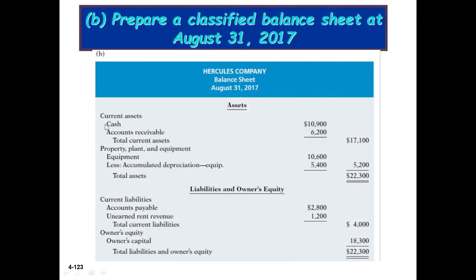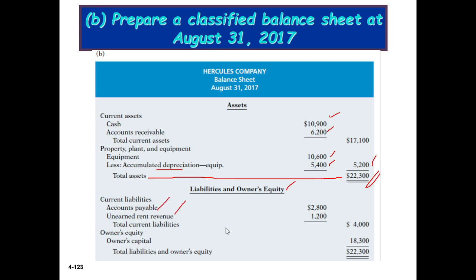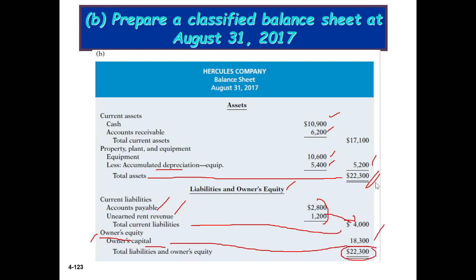In our current assets we have cash and accounts receivable. Next, under property, plant, and equipment, we have the equipment figure less accumulated depreciation to get the net value. This gives us total assets. On the liabilities and owner's equity side, the owner's capital figure from the previous owner's equity statement is transferred in. These two totals are equal, so the balance sheet balances.